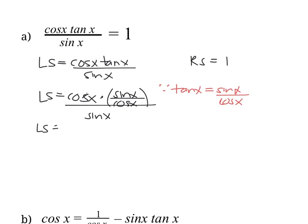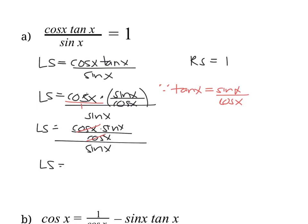Continuing to simplify, we multiply cos x by (sin x / cos x) in the numerator, giving us (cos x · sin x) / cos x, all over sin x. The cos x's cancel, leaving sin x in the numerator and sin x in the denominator, which simplifies to 1. This is exactly the same as our right side. Therefore, left side equals right side, and we've proven this identity to be true.